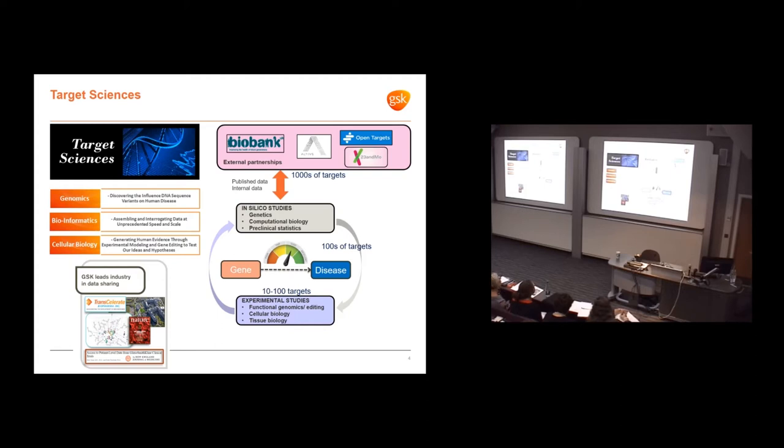Our in silico groups triage these lists of targets down to hundreds, which then enter experimental studies. We have this funnel rapidly reducing the number of targets down to 10 to 100. Eventually we want to take 1,000 targets down to one or two which will go into drug discovery.